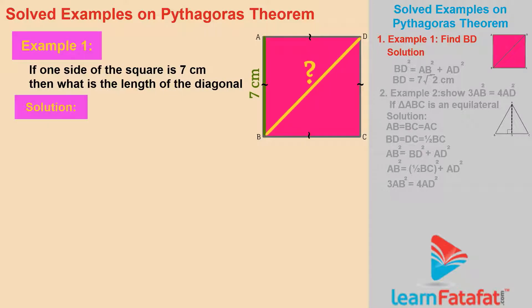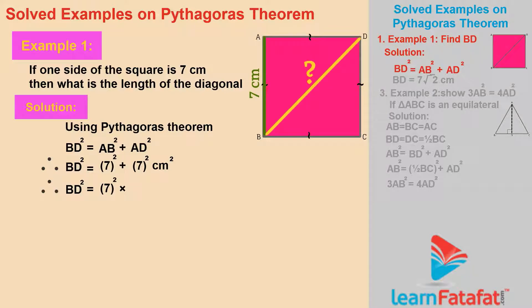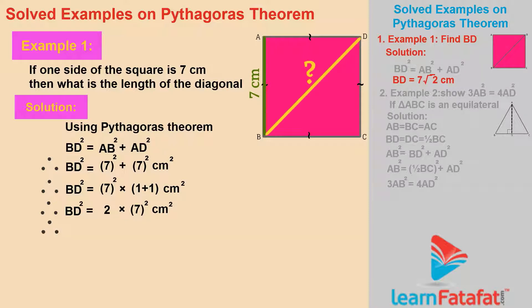Solution. Using Pythagoras theorem, BD² = AB² + AD². That is, BD² = 7² + 7² cm² = 7² × (1 + 1) cm² = 2 × 7² cm². Therefore, BD = 7√2 cm.